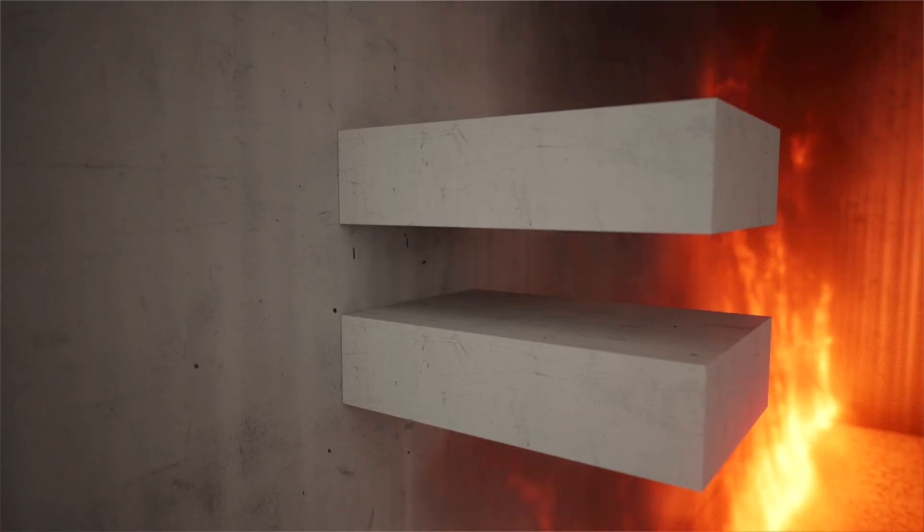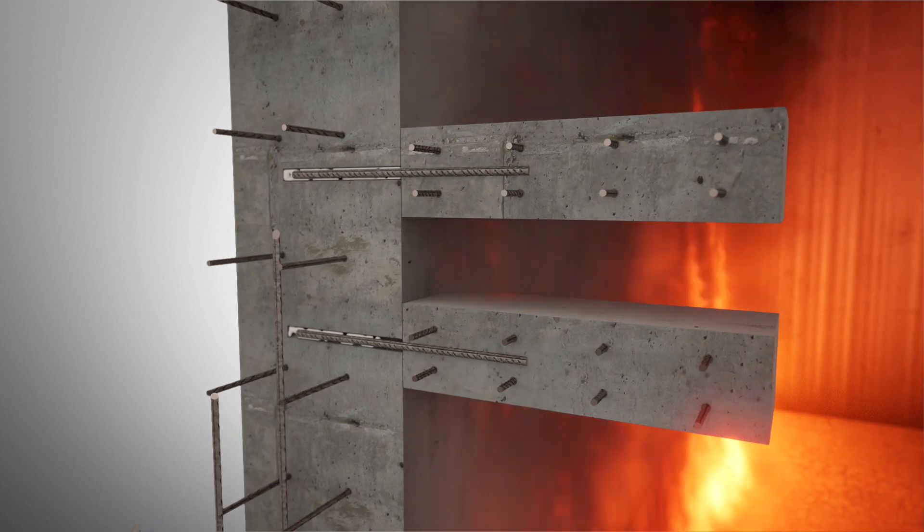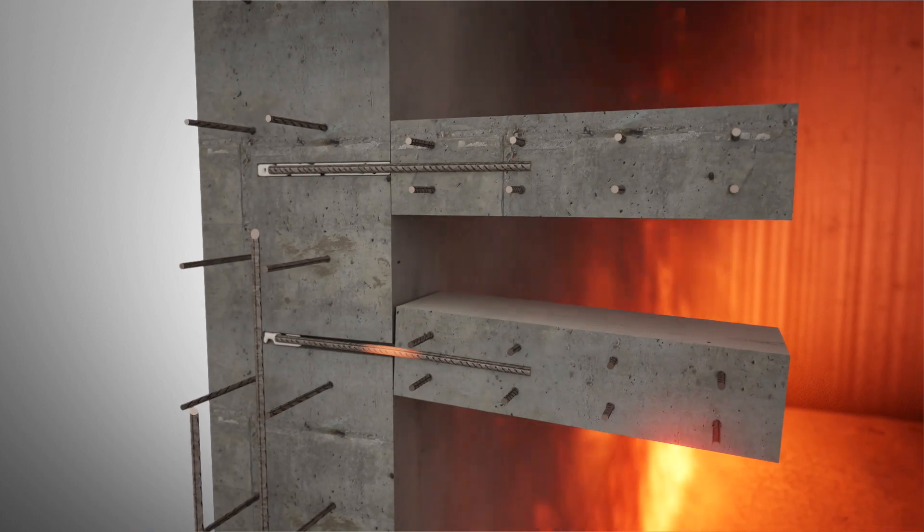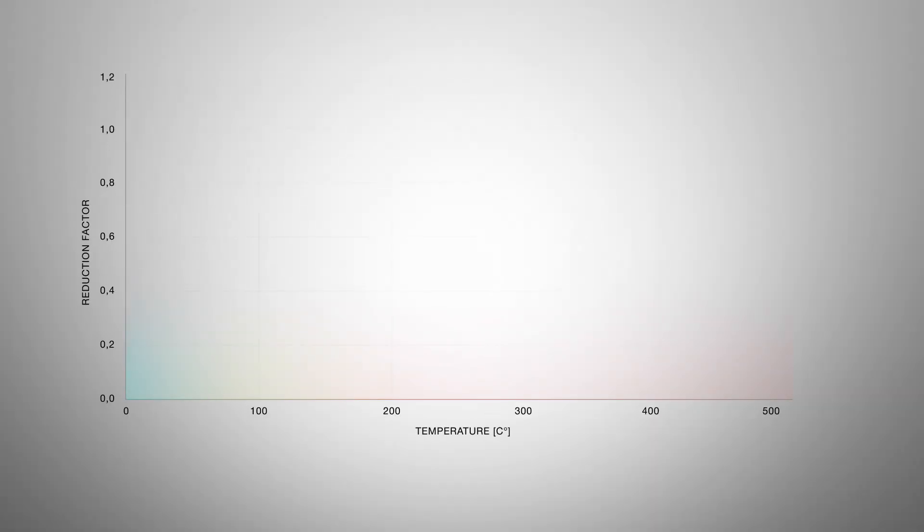This is crucial in structures with post-installed rebar connections. Here, the rebar must be protected because most chemical mortars offer little fire resistance, losing significant bond strength at 150 degrees and failing at around 350 degrees.